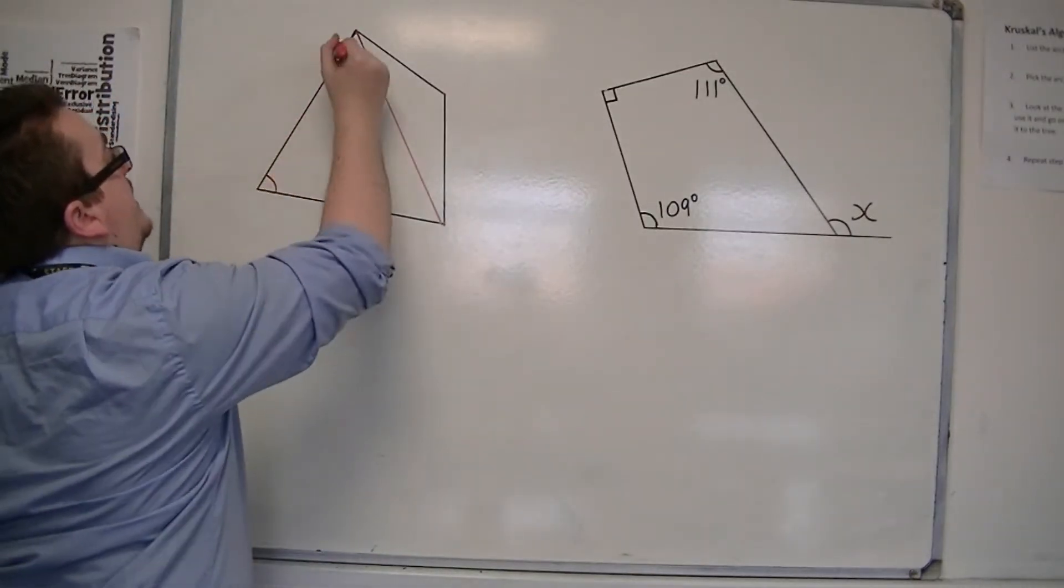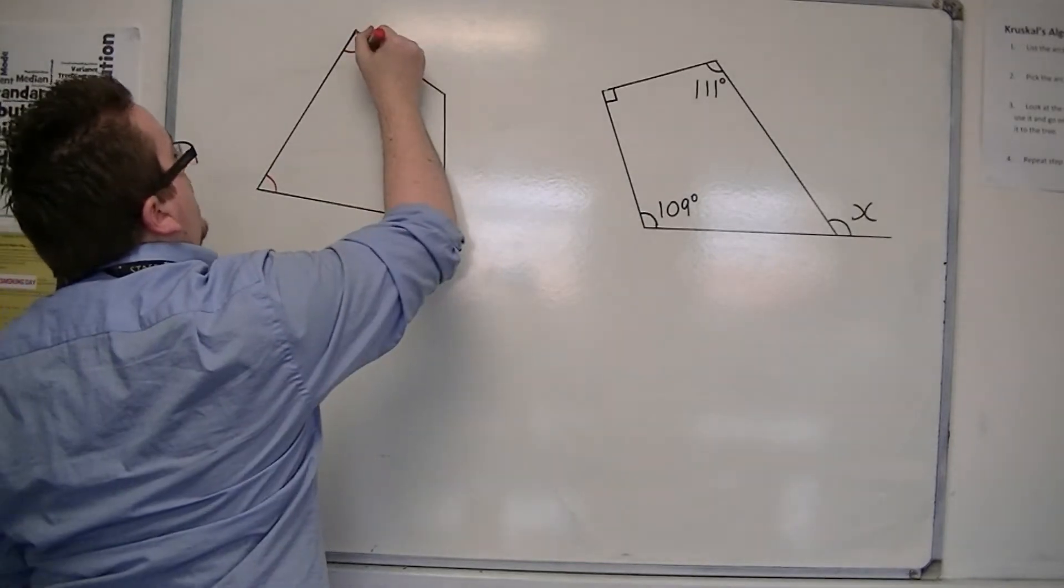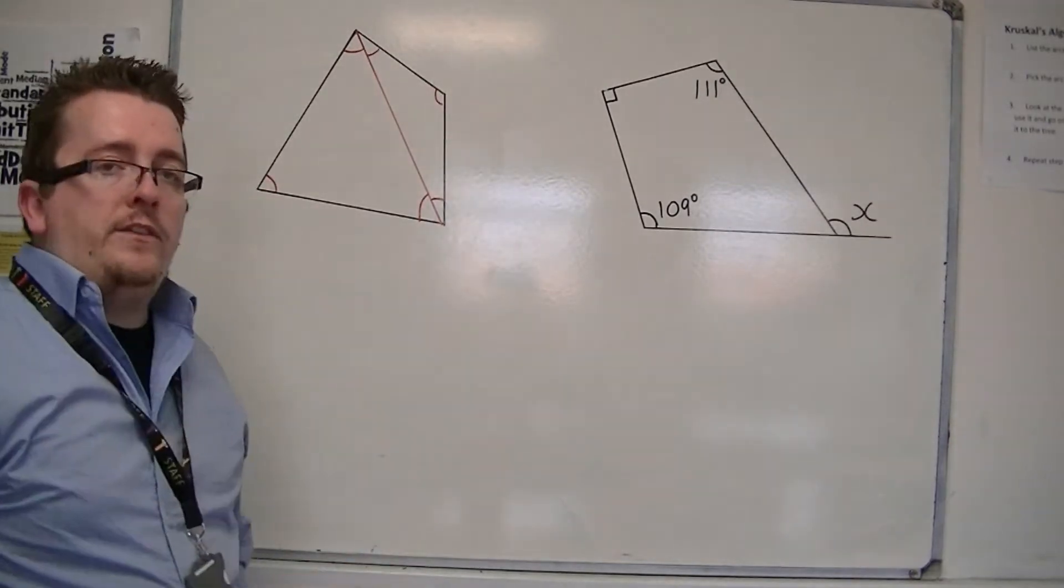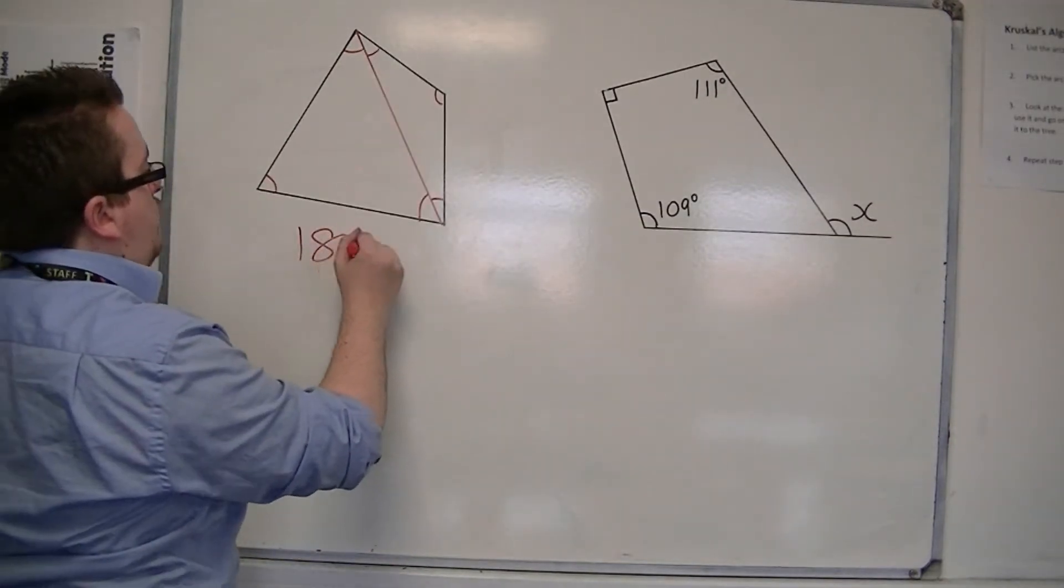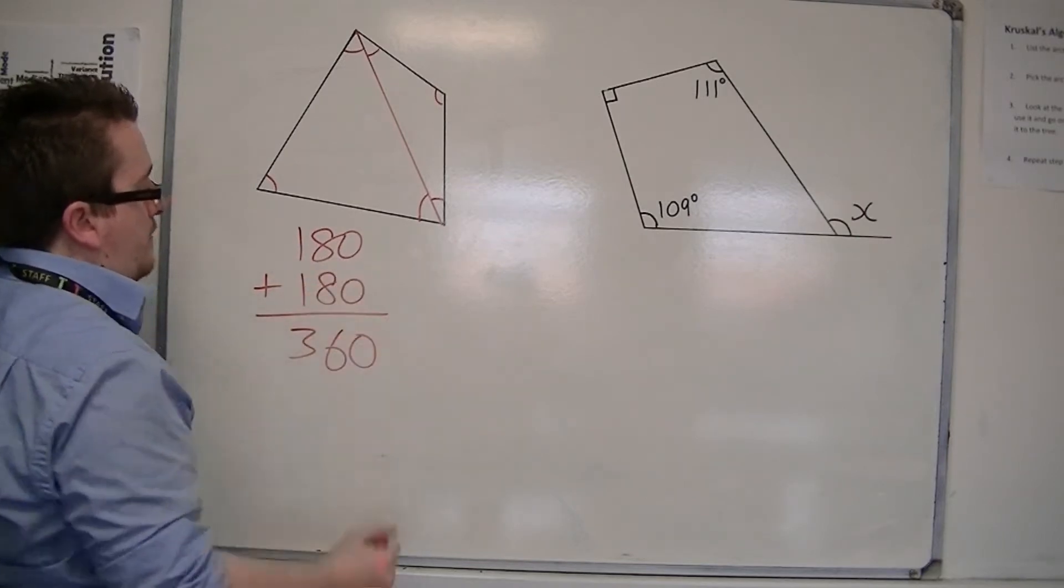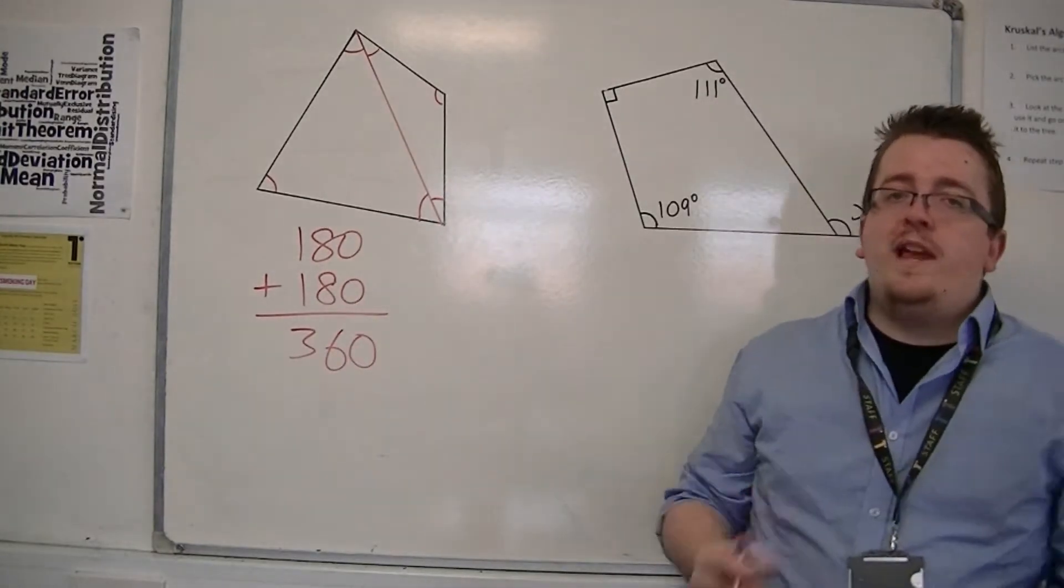So we've got 180 from those three angles, and 180 from these three angles. So in actual fact, the total must be 180 plus 180, which is 360.